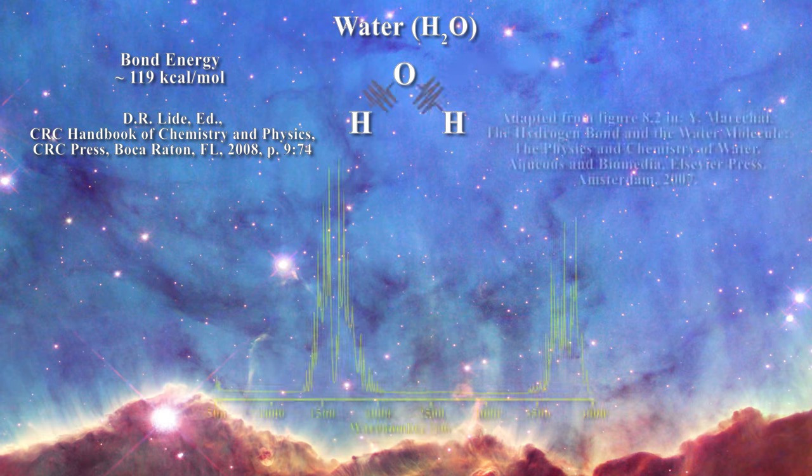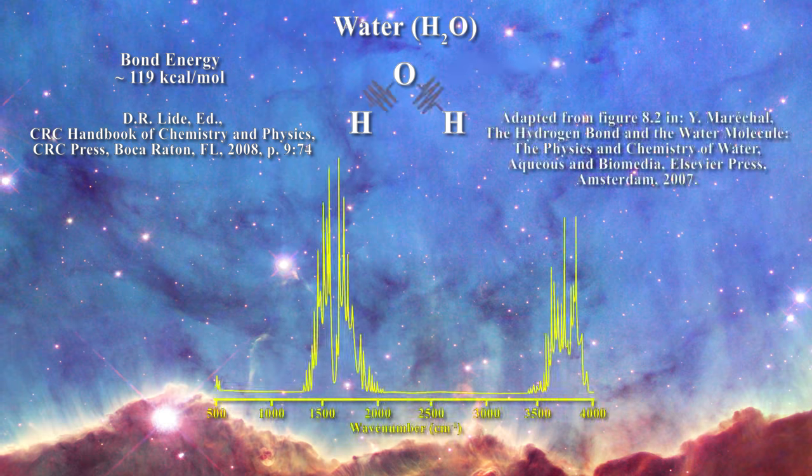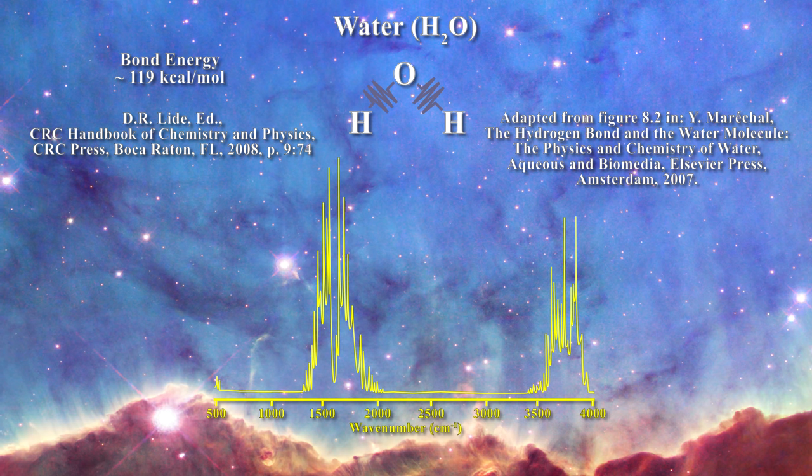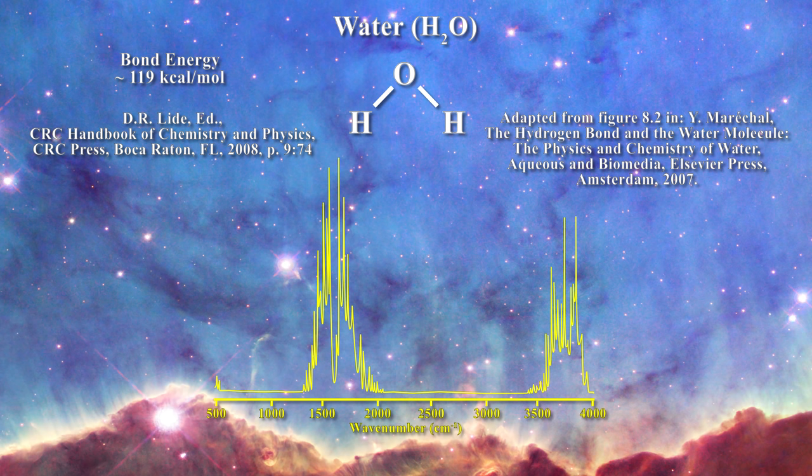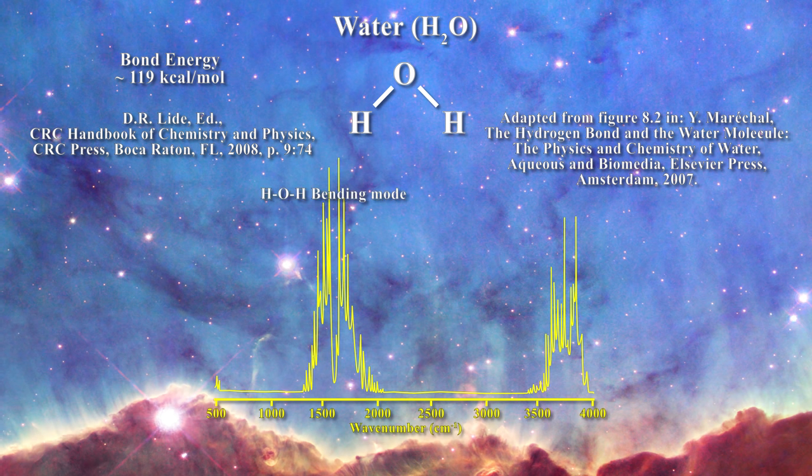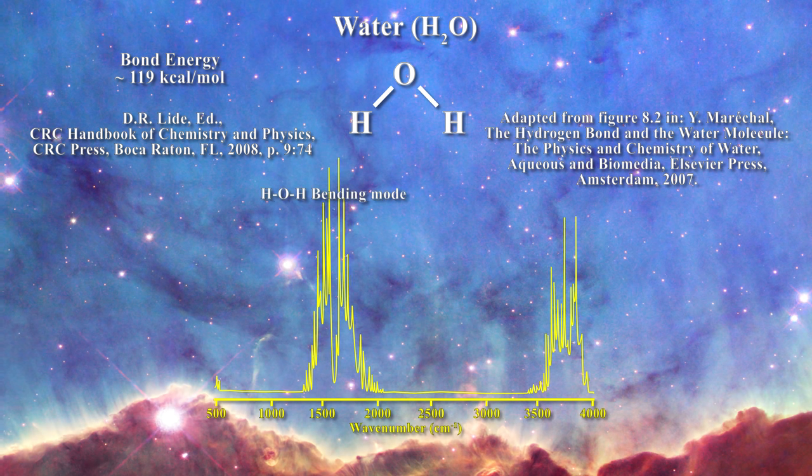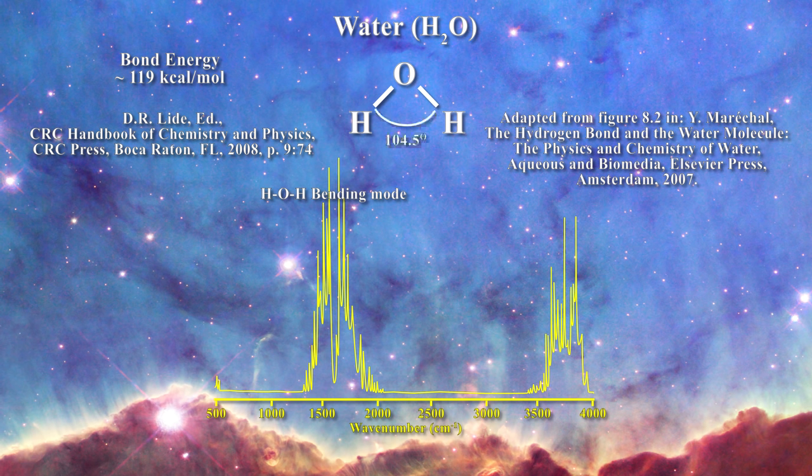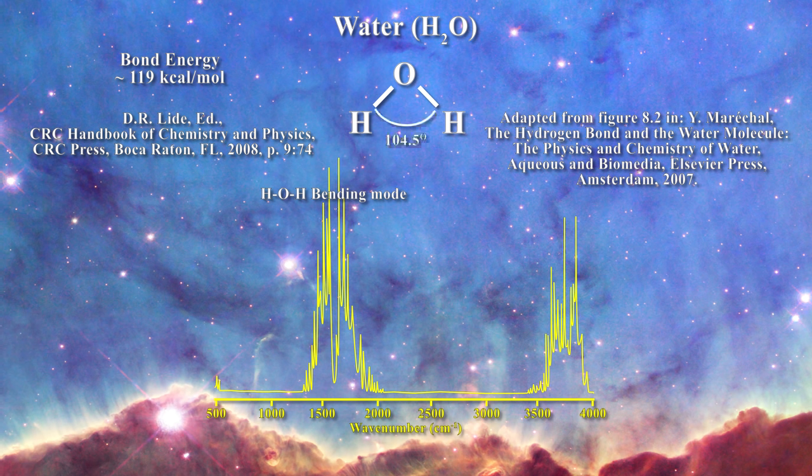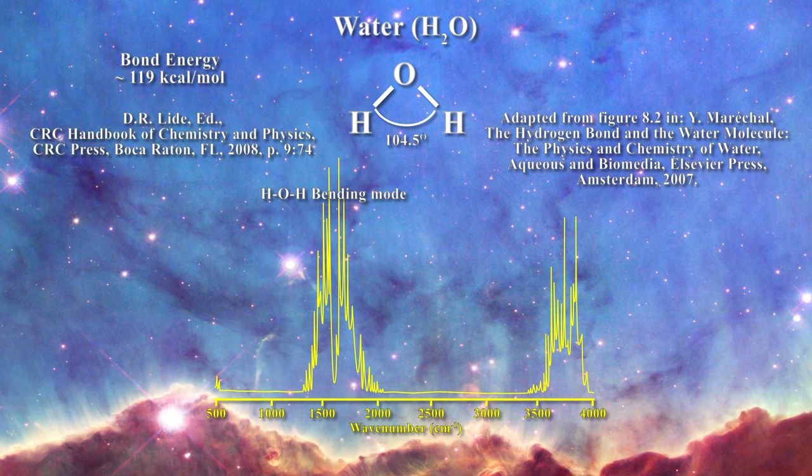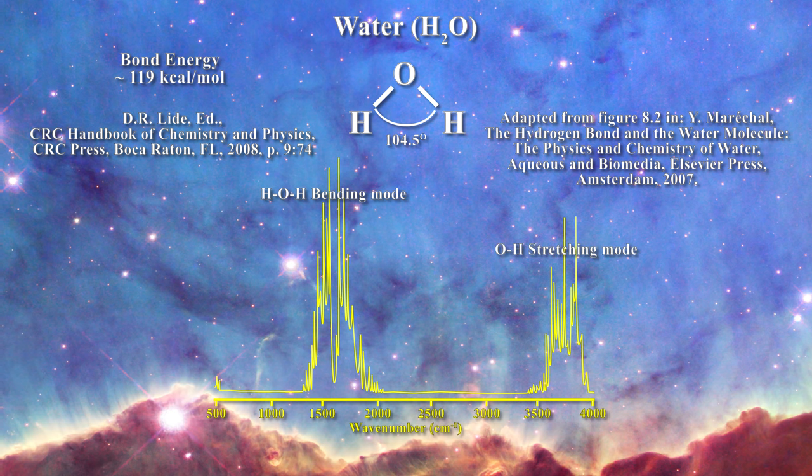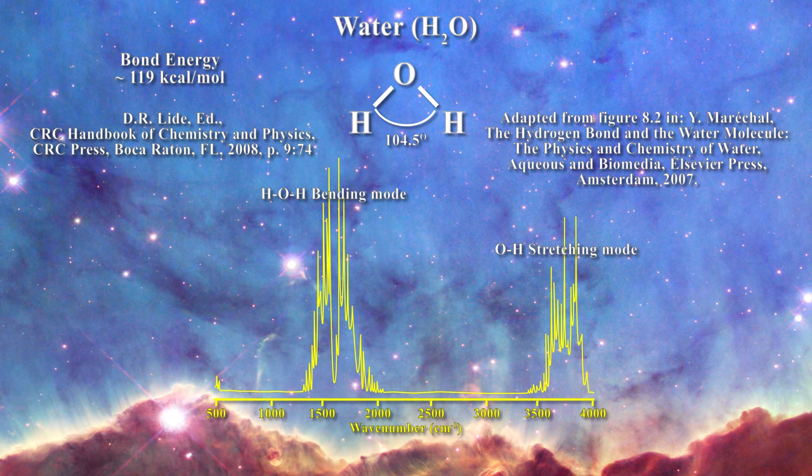Here is a schematic representation of the spectrum of water vapor. There are two prominent features. The first near 1600 reciprocal centimeters corresponds to the HOH bending mode of water as the molecule slightly alters its 104.5 degree angle. The second group of lines centered near 3700 reciprocal centimeters corresponds to the OH stretching mode for water, similar to what we saw in hydrogen chloride.